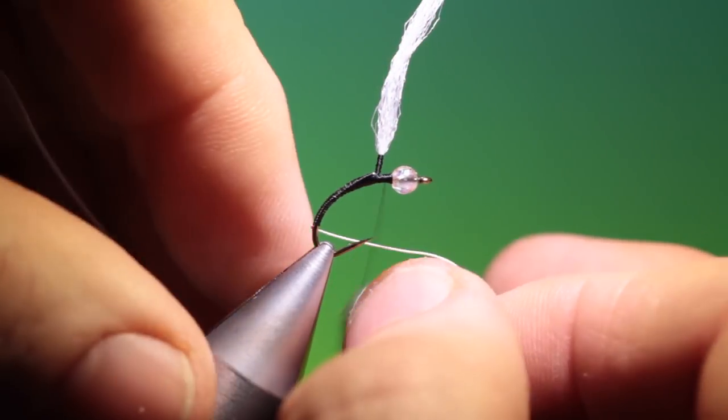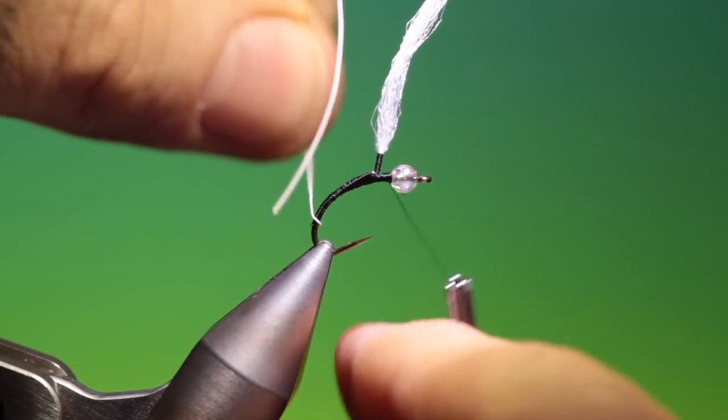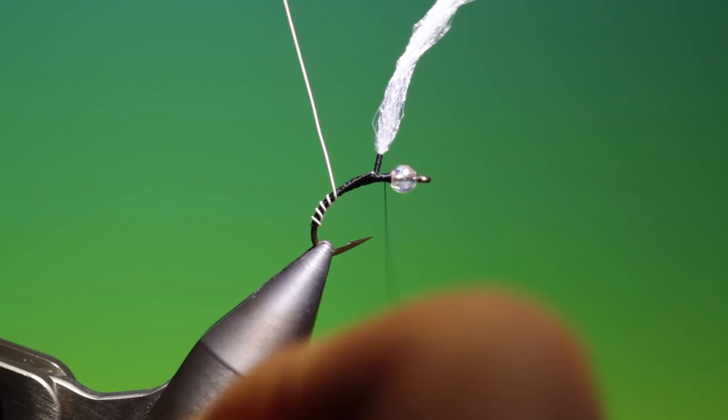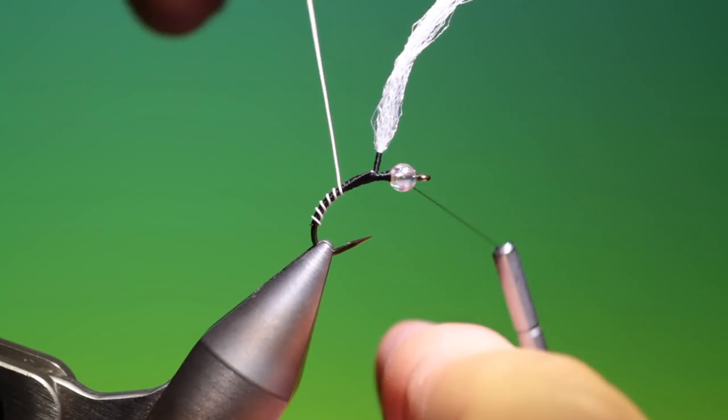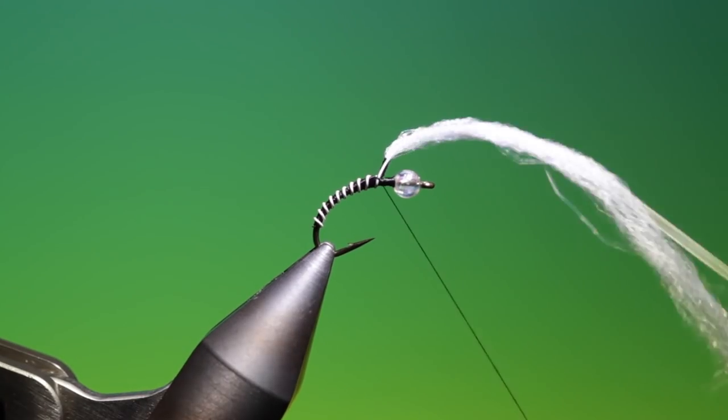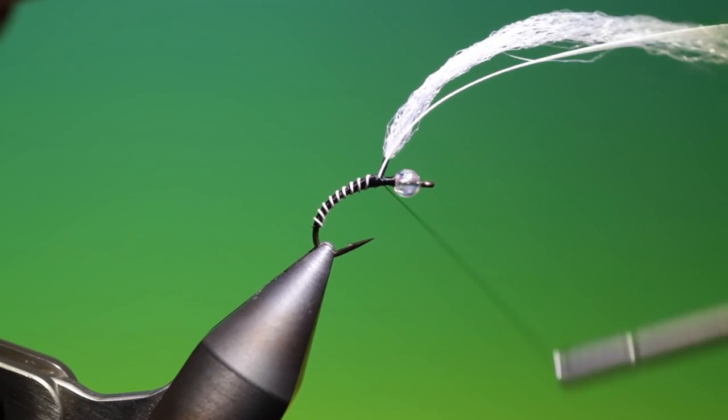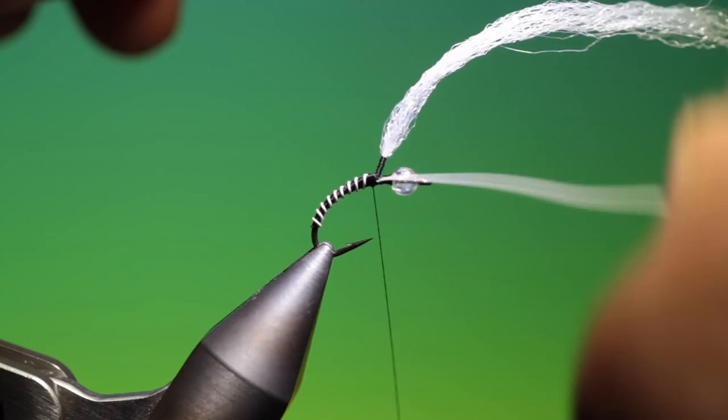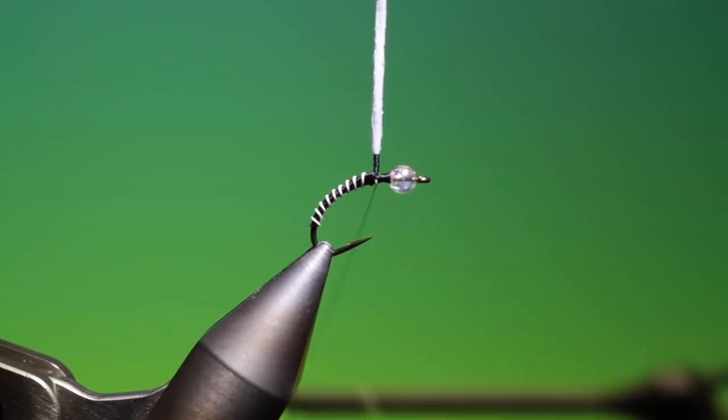Now we can put our white rib in. If any of you have fished with the zebra midge, you'll know how effective it is. And I find this works absolutely brilliant even if there are no midges hatching, as an attractor. Trout will pick it up. So we'll go to that and just tie that off. Go back to the first segment and we'll just remove that with friction. There we are, that's good.